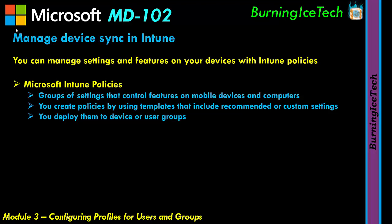You can deploy settings to device or user groups by choosing a group on the Azure Active Directory and deploying the relevant policy. Intune policies fall into the following categories — I'll mention four. The first is configuration policies.